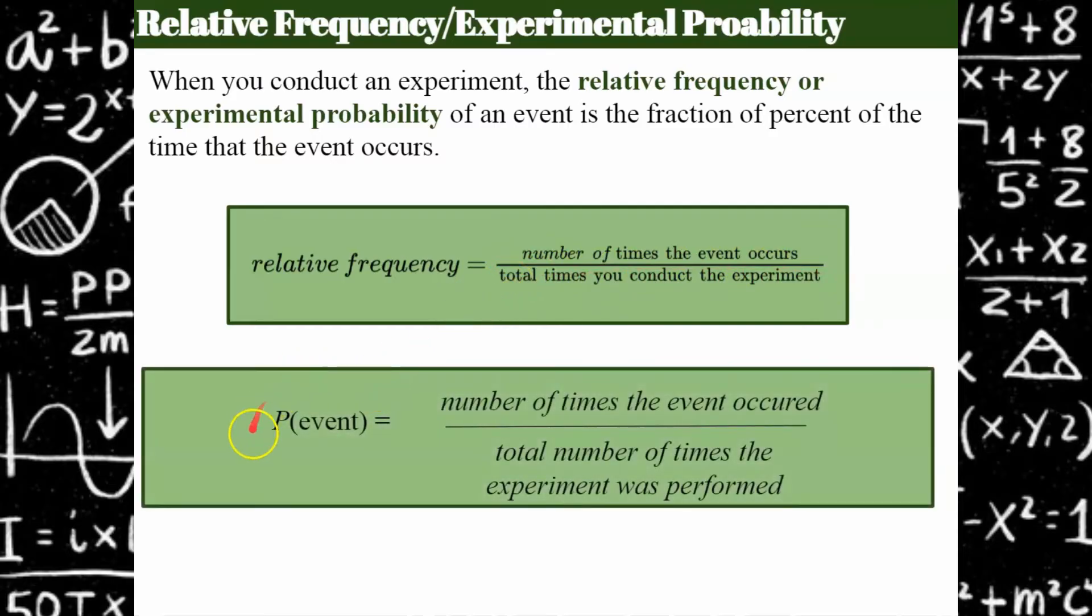We could also refer to this as the probability of the event occurring during an experiment, and it's how many times the event occurred out of the total number of times the experiment was performed. You can see that probability of an event occurring through an experiment and relative frequency are the same.